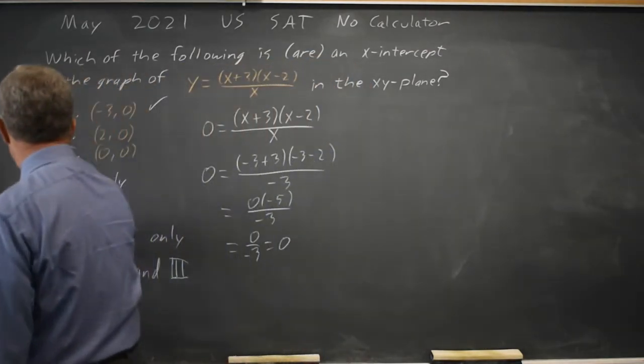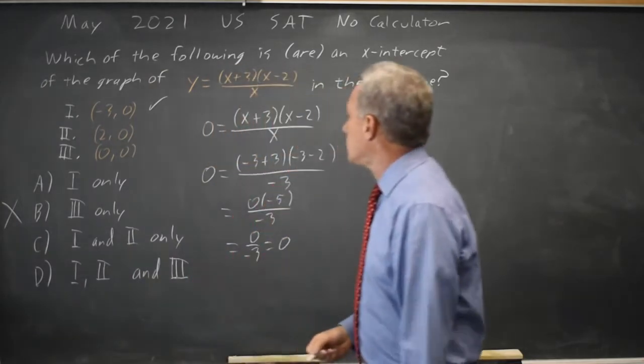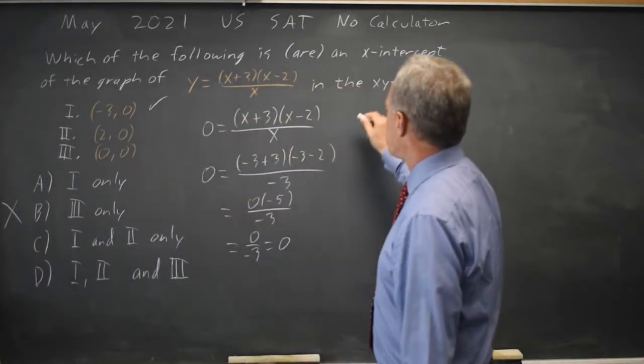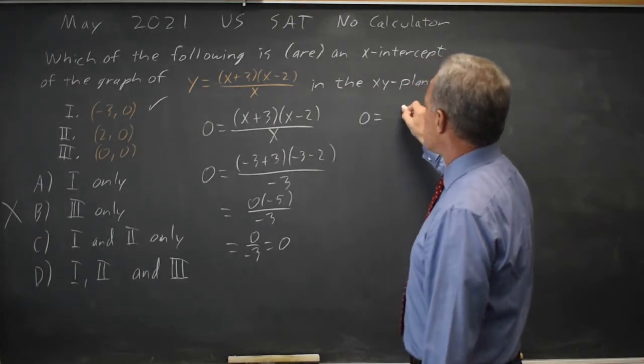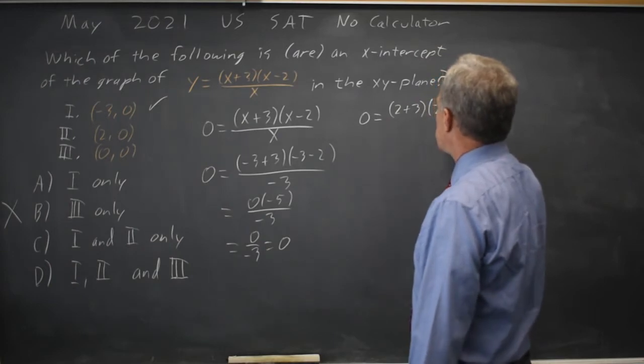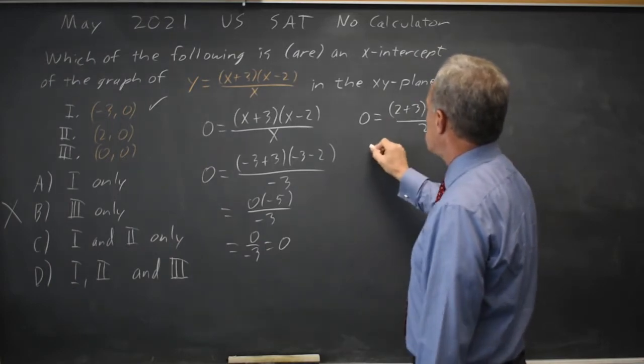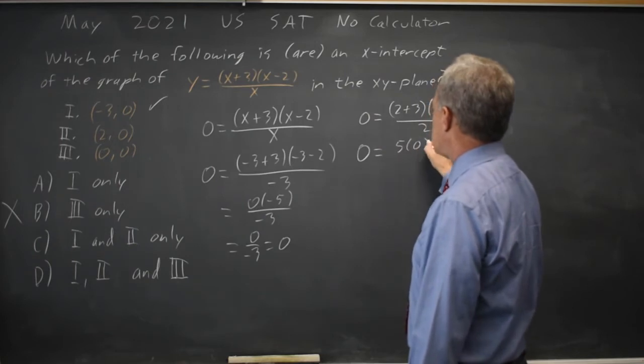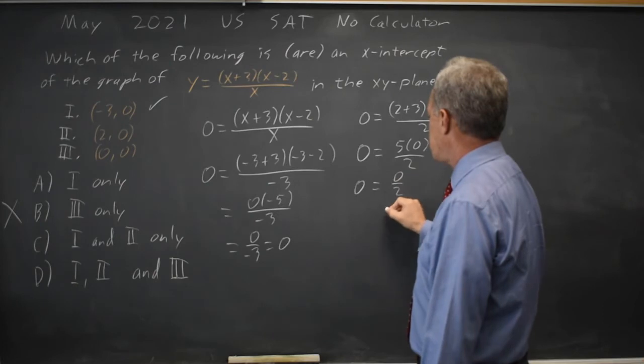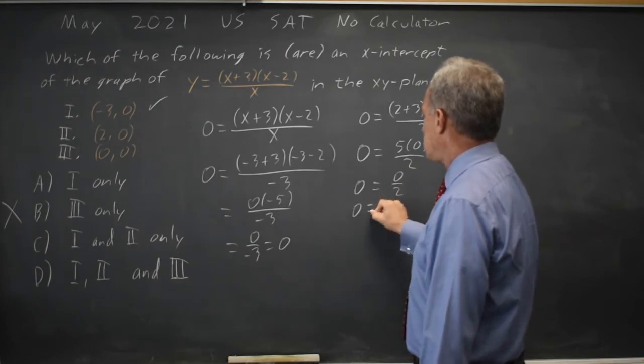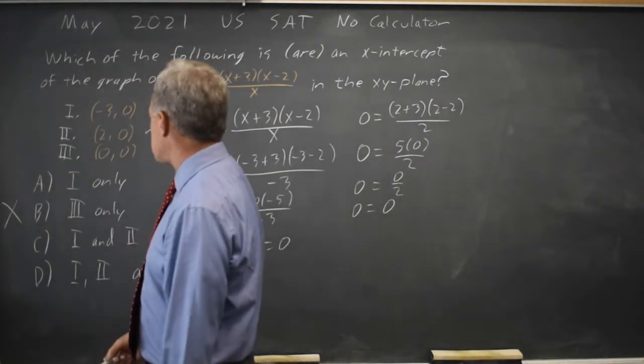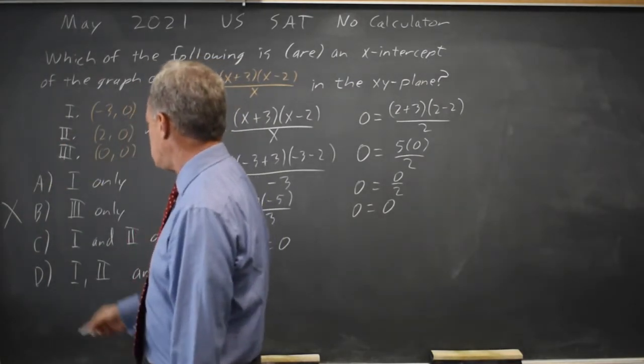Let's try number 2, x equals 2. The y-value is supposed to be 0 equals (2+3)(2-2)/2, which is 0 equals 5 times 0 over 2, 0 equals 0 over 2, which is 0. x equals 2 does give me y equals 0, so choice 2 also works.